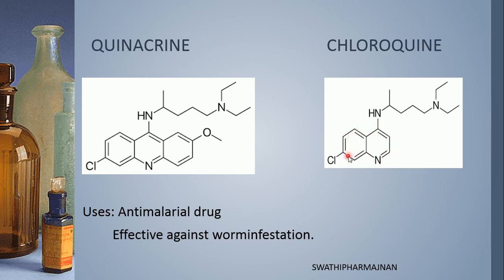In chloroquine, the quinoline basic nucleus is present. Quinoline is benzene fused with pyridine, and a chloro group is present at the seventh position. It is primarily an anti-malarial drug; malaria is a protozoal disease caused by Plasmodium species. That is why it can also be effective in the treatment of various helminthic infestations.